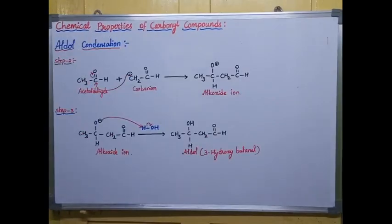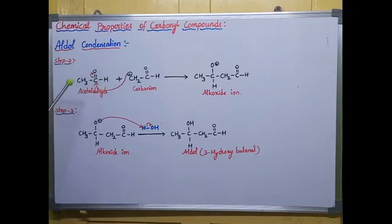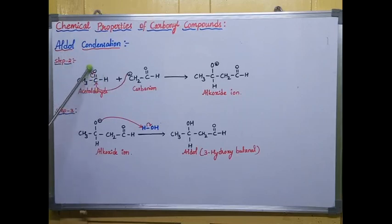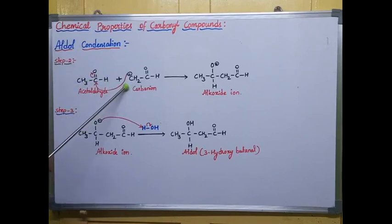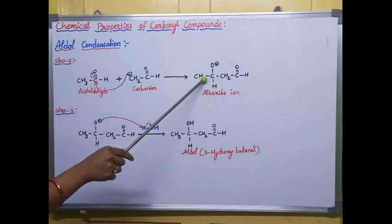In Step 2, the carbanion generated in Step 1 attacks the second molecule of acetaldehyde. In this second molecule, the bond of the carbonyl group shifts towards the oxygen, so oxygen gets a negative charge and carbon gets a positive charge. This positively charged carbon is then attacked by the negatively charged carbanion, forming a new C–C bond with CH₂CHO.